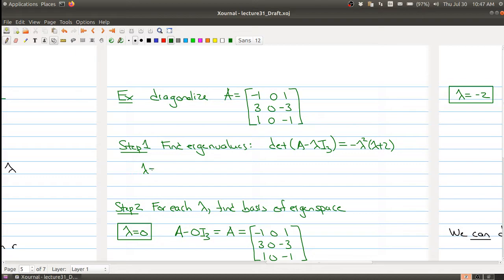I can solve for the eigenvalues from this. Lambda equals negative 2 has algebraic multiplicity 1 because it only appears to the power 1. The other one is lambda equals 0 with algebraic multiplicity 2.